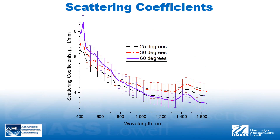Scattering coefficients were found to decrease with increasing wavelength at each temperature, with stronger spectral dependence at 60 degrees Celsius compared to 25 and 36 degrees Celsius. The much steeper slope at 60 degrees Celsius may be explained by tissue coagulation causing destruction of larger scatterers such as erythrocytes, as well as homogenization of blood vessel walls and collagen bundles in the dermis.